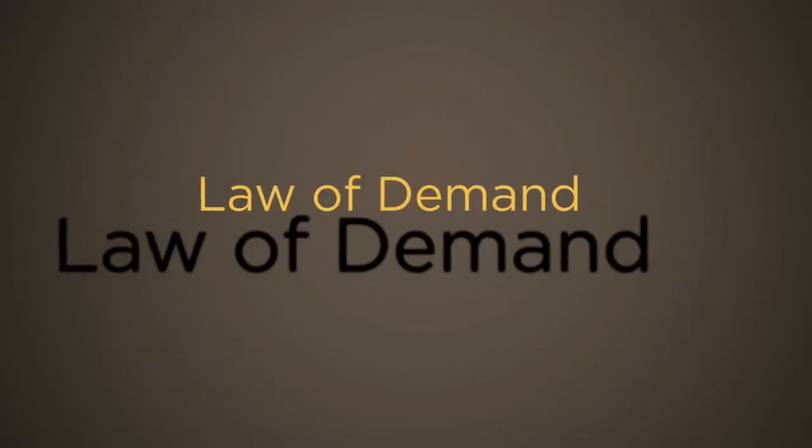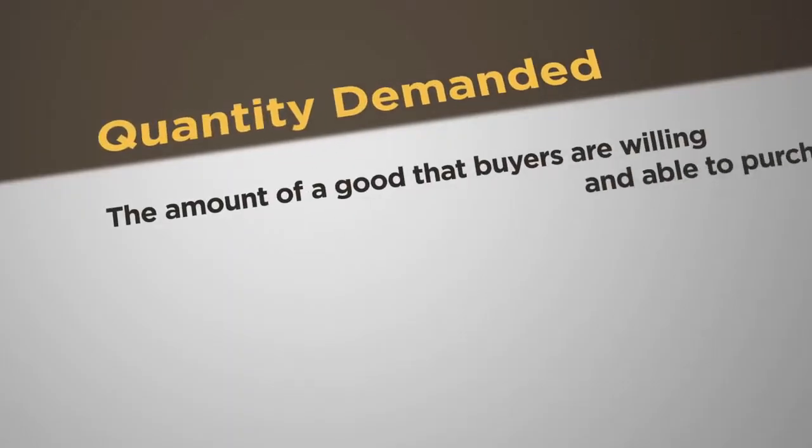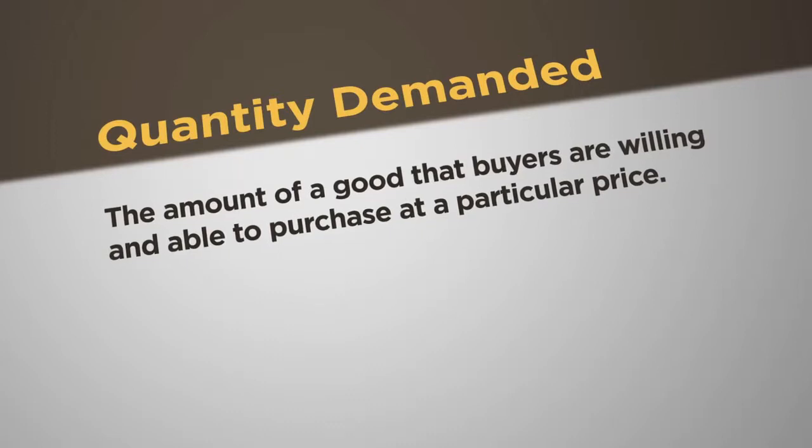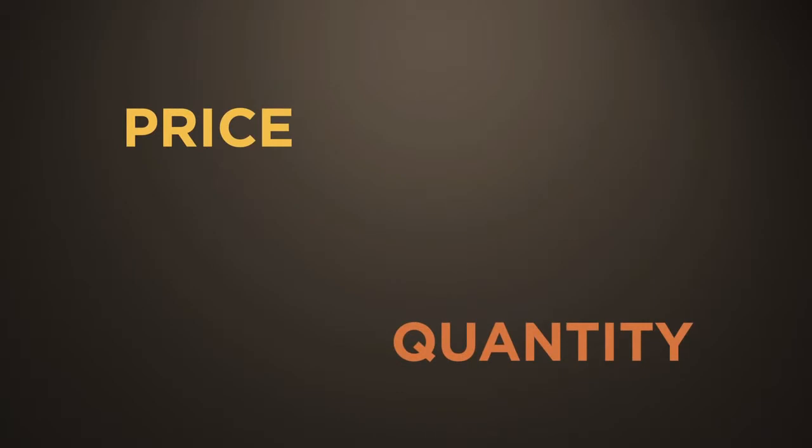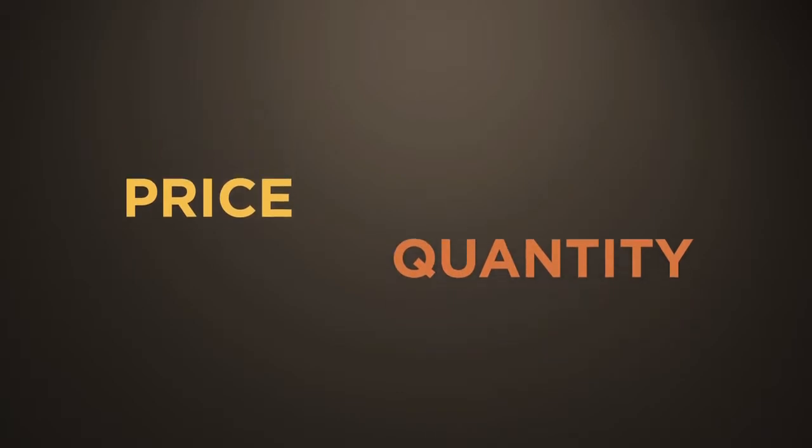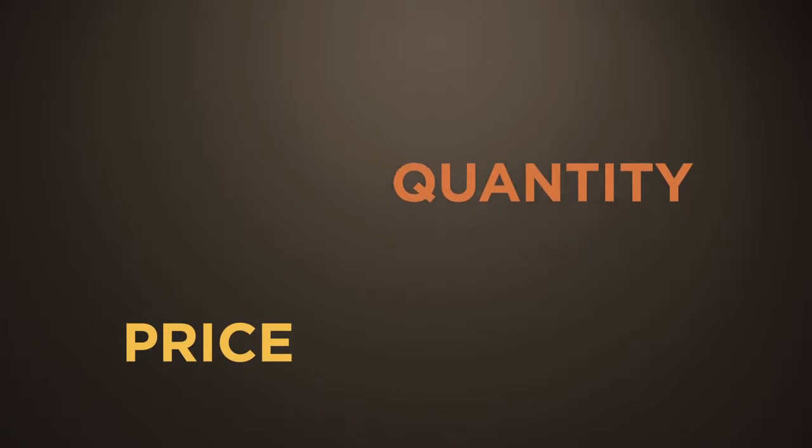Quantity demanded is the amount of a good that buyers are willing and able to purchase at a particular price. Many things determine demand, but only price can determine the quantity demanded of a specific good. The Law of Demand states that, other things being equal, when the price of a good rises, the quantity demanded of that good falls. The reverse is also true. When the price of a good falls, the quantity demanded of the good rises.